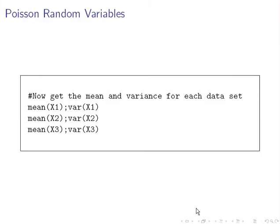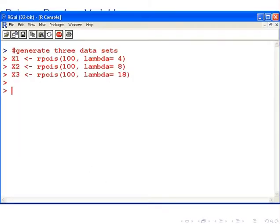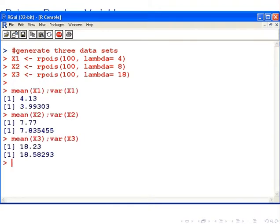Now, what do we do? Well, what we're going to do is simply compute the mean and variance of each. I'm just going to run this bit of code here as well, just simply compute the mean and variance of all three data sets.